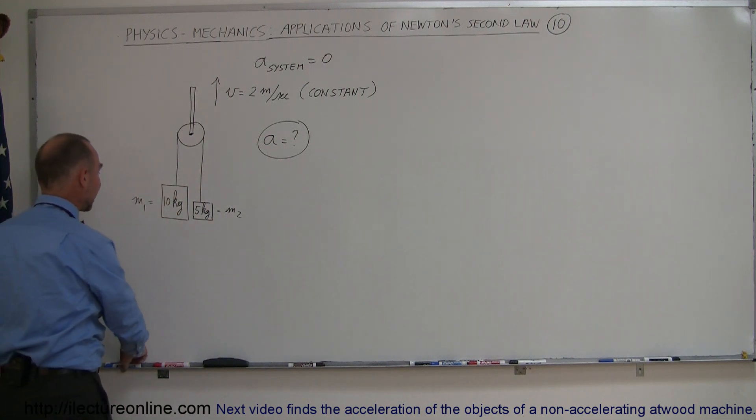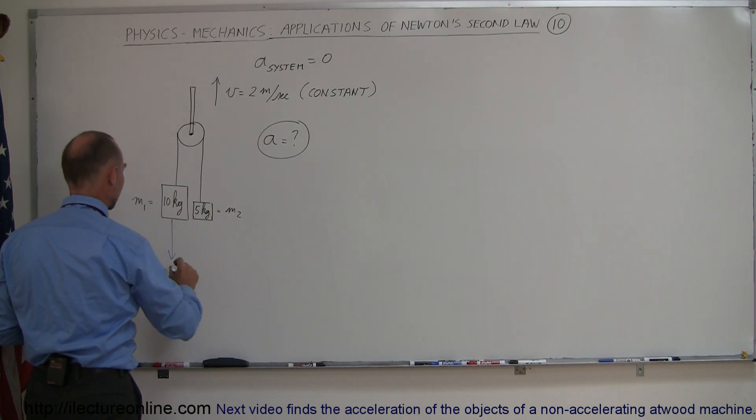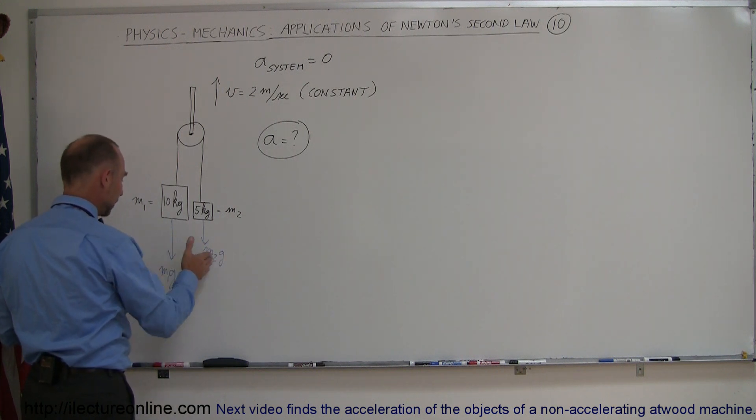In this case, we can simply look at it like we did before. We have M1g pulling downward like this, and M2g pulling down like this. We can say that since M1g is bigger than M2g,